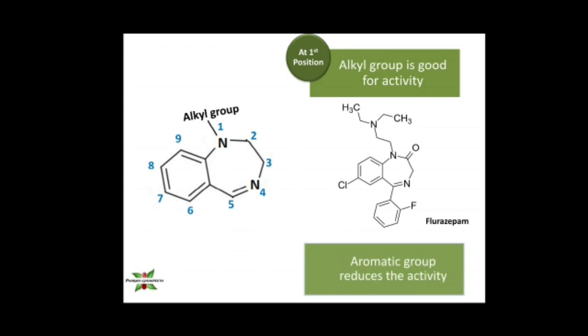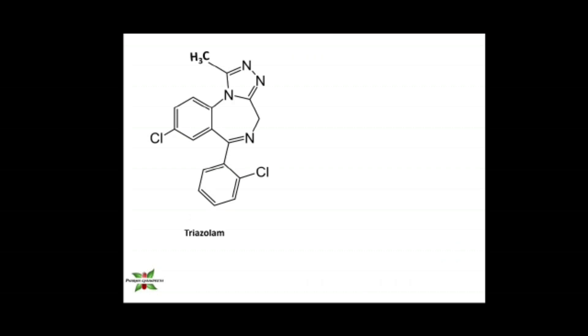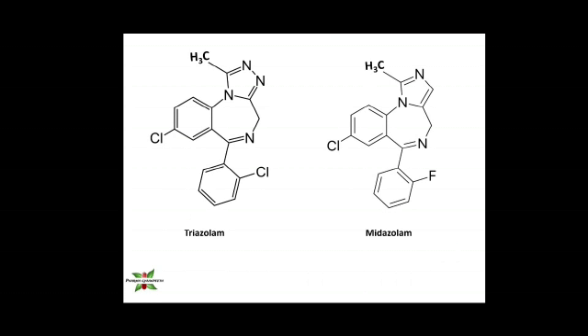At position one, there should not be any aromatic group, because an aromatic group reduces the activity. However, other ring substituents such as triazole or imidazole rings can be present — for example, triazolam has a triazole ring and midazolam has an imidazole ring. These ring substituents do not reduce the activity; only aromatic groups reduce it.